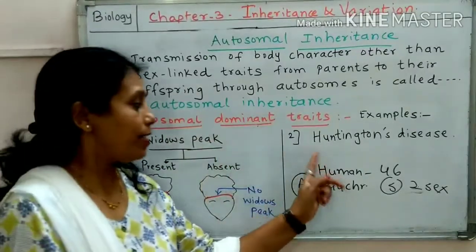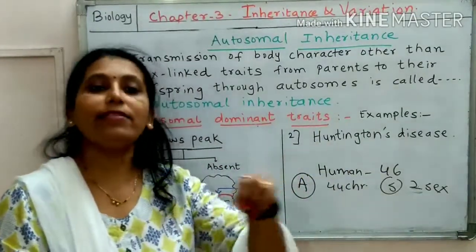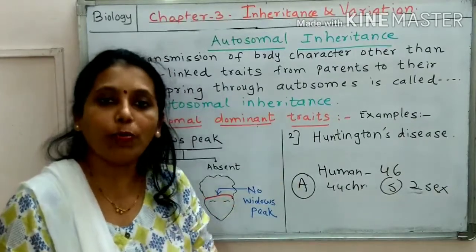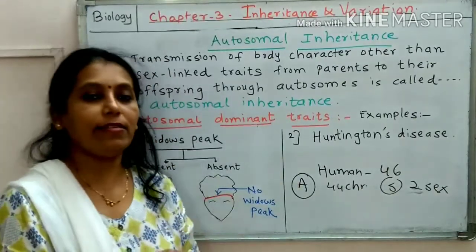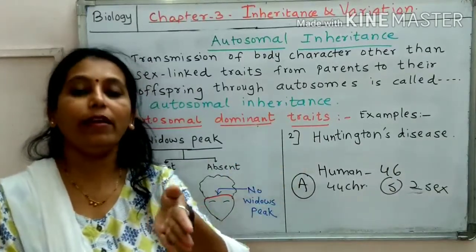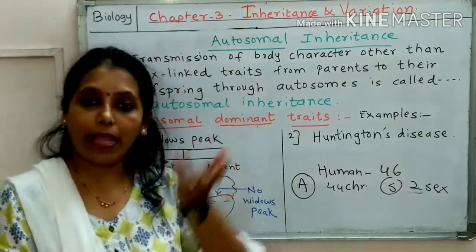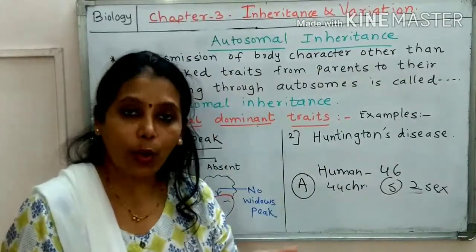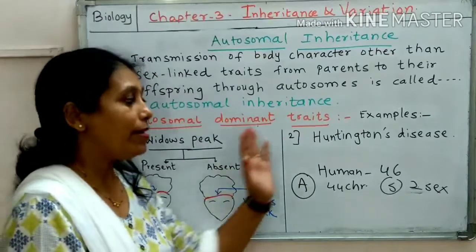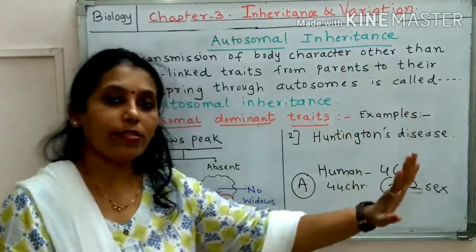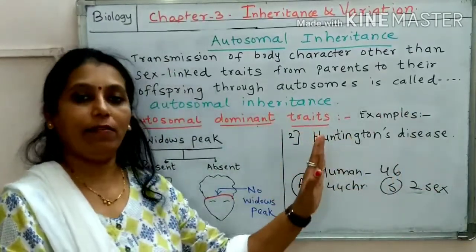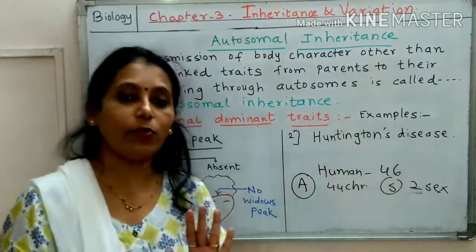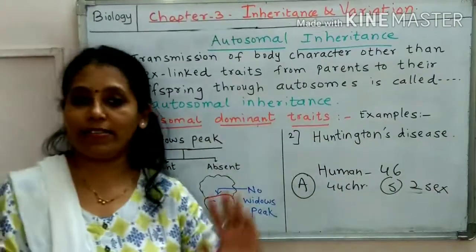Another example is Huntington's disease. In this disease, it is an inherited autosomal disease, and in this disease the nerve cells slowly start damaging in the brain, which definitely damages the brain. The name Huntington's disease was given because Huntington was a physician who discovered this disease.